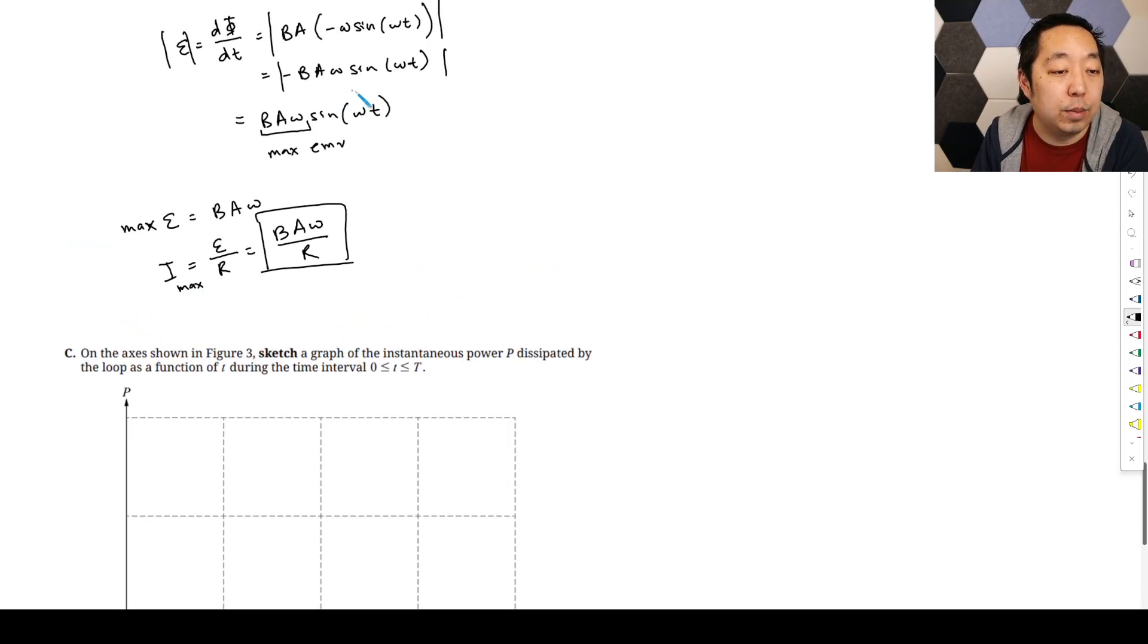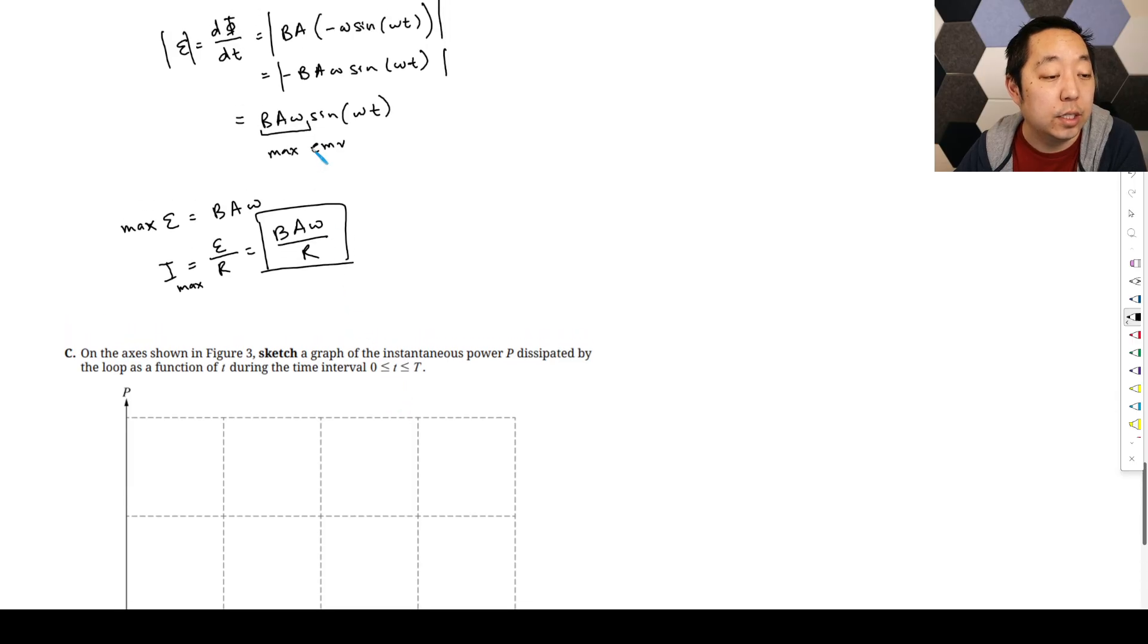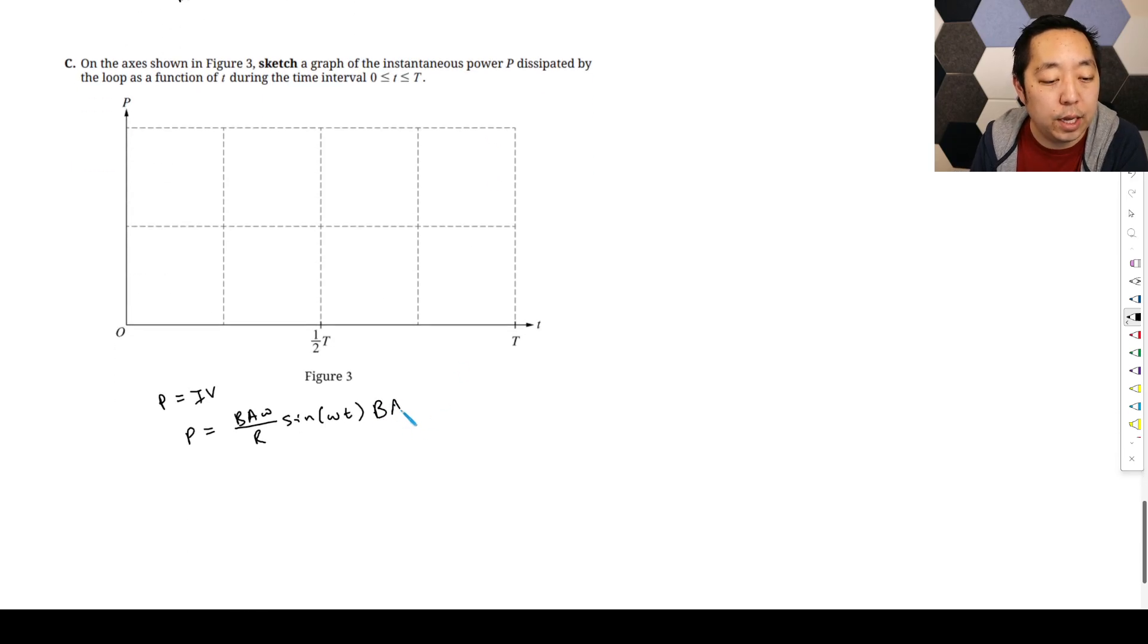I max is going to be this times sine of omega T. What I'm doing here is P equals I times V. And then the voltage is—you can either do I squared R or you can just multiply by the voltage, which would just be another BA omega sine of omega T. And you're just going to square this: B squared, A squared, omega squared over R, sine squared of omega T.